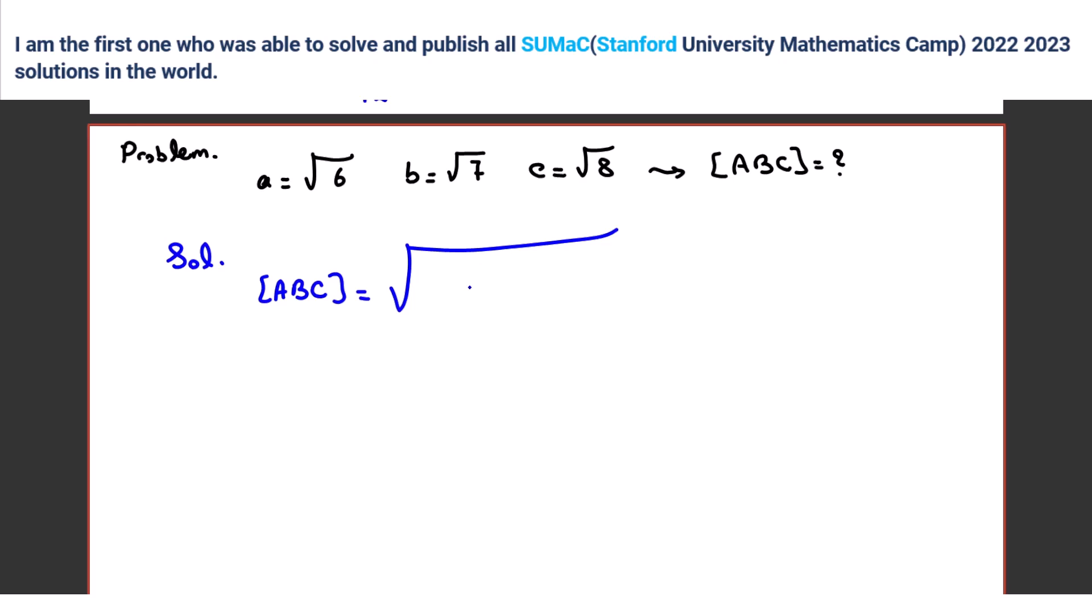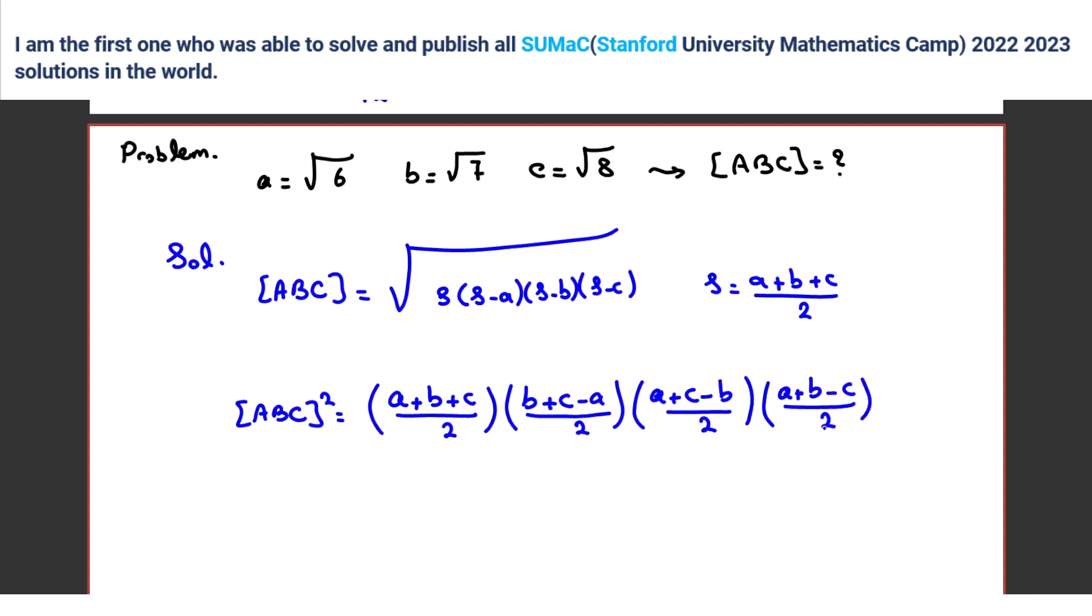Area of A, B, C by Heron's formula is what? S times S minus A, S minus B, S minus C. S is what? Semi-perimeter. Yeah, so it would be A plus B plus C over 2, right? Yeah. So area of A, B, C whole squared is what? Is A plus B plus C over 2. Next bracket is what if you simplify? B plus C minus A over 2. Then A plus C minus B over 2, and then A plus B minus C over 2.